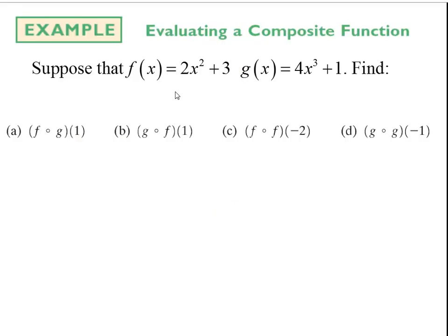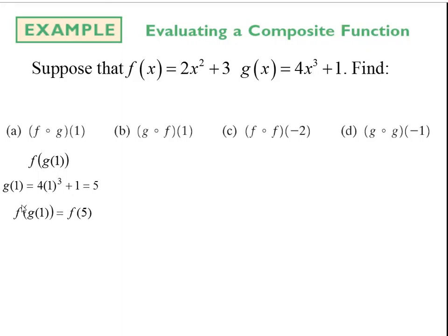Suppose we have f of x equals 2x squared plus 3, and g of x equals 4x cubed plus 1. For letter A, we want to find f composed with g at 1. There's an inherent order of operations — I'm going to plug 1 into the g function first and evaluate g of 1. That gives me 5. So the inside is really 5, meaning g at 1 is 5. Then I evaluate f at 5, plugging 5 into f, which gives me 53. So f composed with g at 1 equals 53.